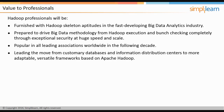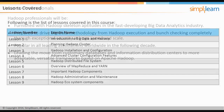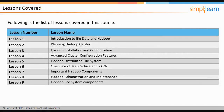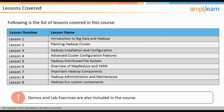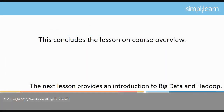In the next screen, we will focus on the list of lessons covered in this course. There are nine lessons covered in this course. In addition to the lessons, there are some demos and lab exercises provided in the course to facilitate better understanding of the concepts. This concludes the lesson on course overview. The next lesson provides an introduction to Big Data and Hadoop. Wishing you all the luck for this course.